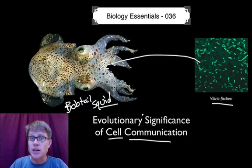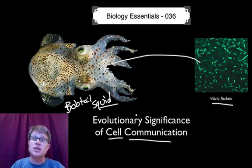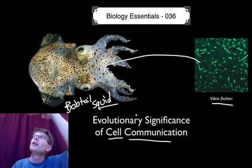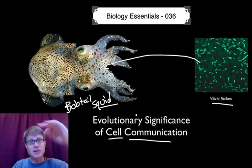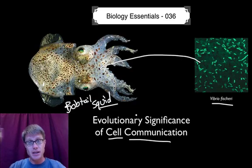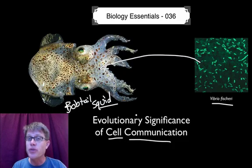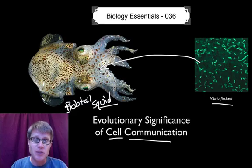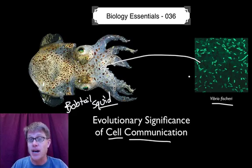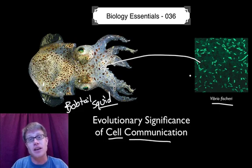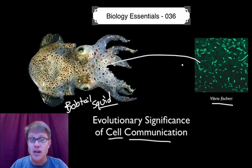The reason it can bioluminesce is that if you're a fish looking at the bobtail squid from below, they can adjust the light so they actually blend in with the sky. They're both getting something out of this relationship — the bobtail squid feeds the bacteria little packets of polysaccharides, and in return gives them a place to live.